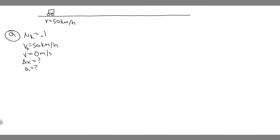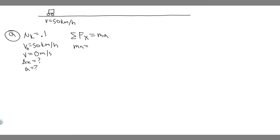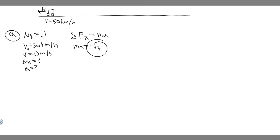So we're going to take the sum of the forces in the x direction, which equals ma. The only force acting in the x direction is the force due to friction, and friction acts backwards, so it's negative. So the sum of forces gives us: negative force of friction equals ma. The formula for force of friction is mu sub k times F sub n.